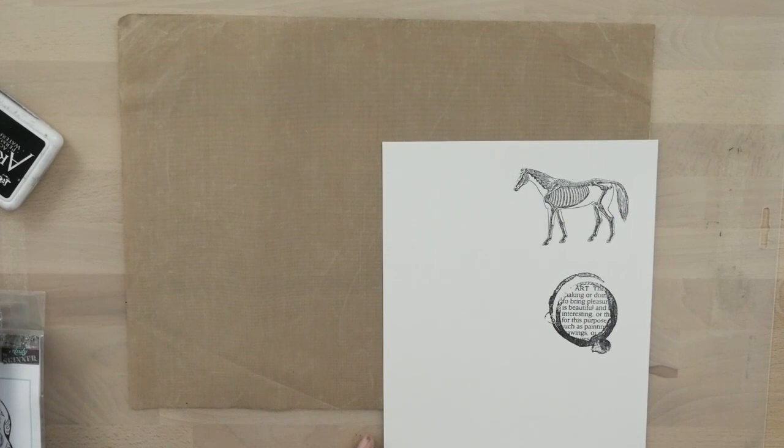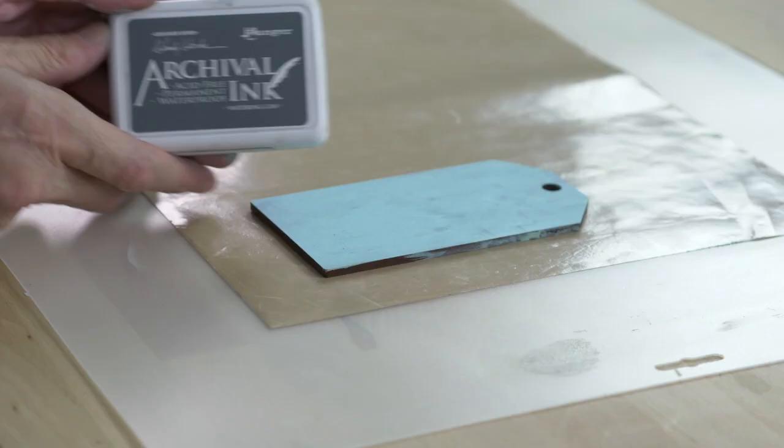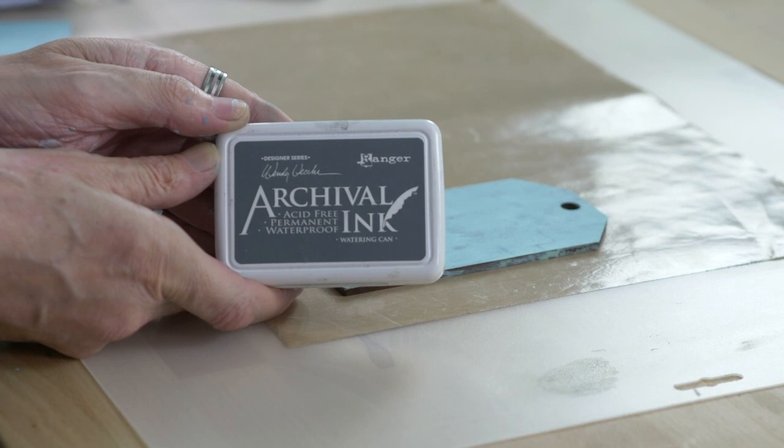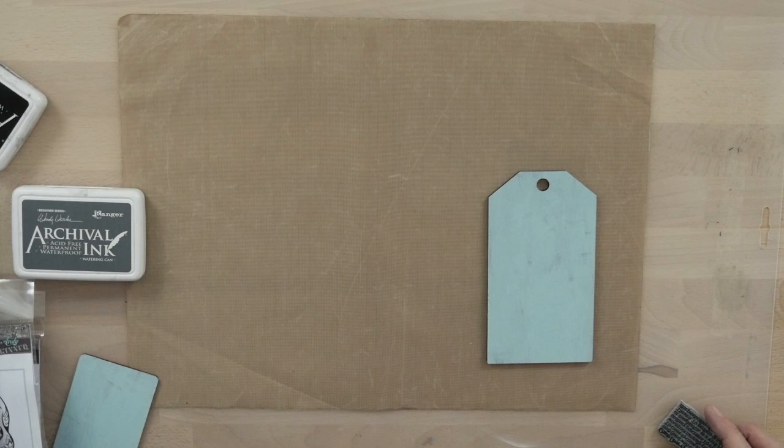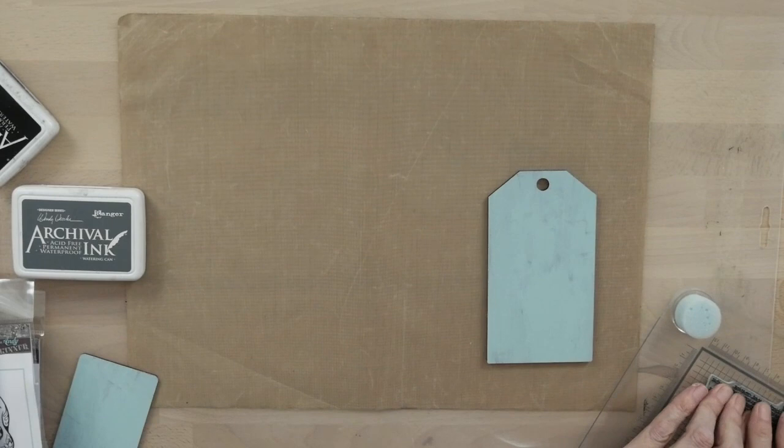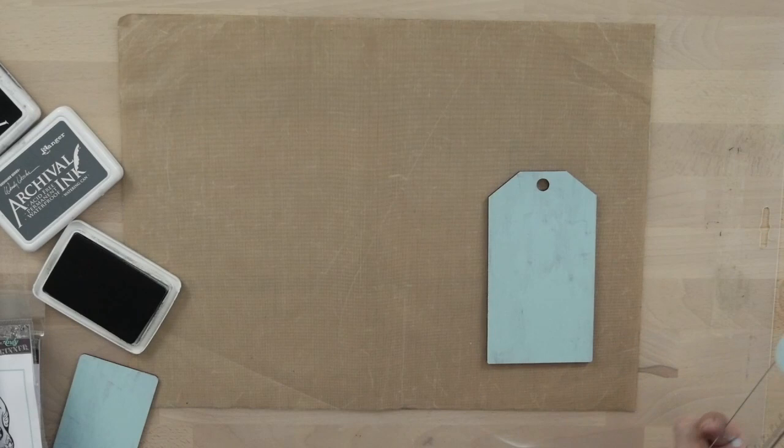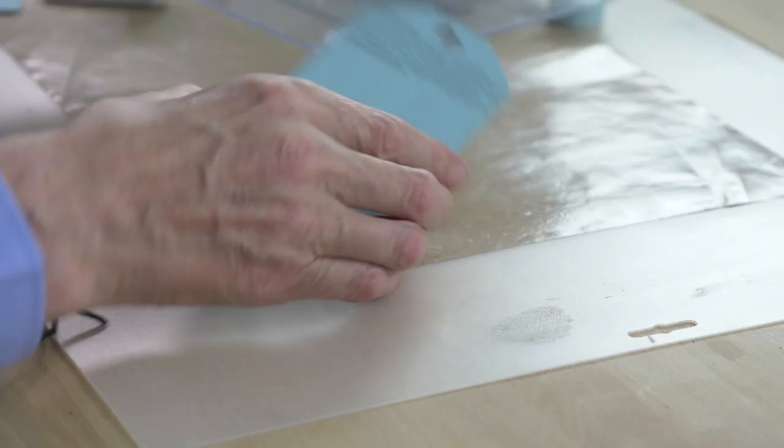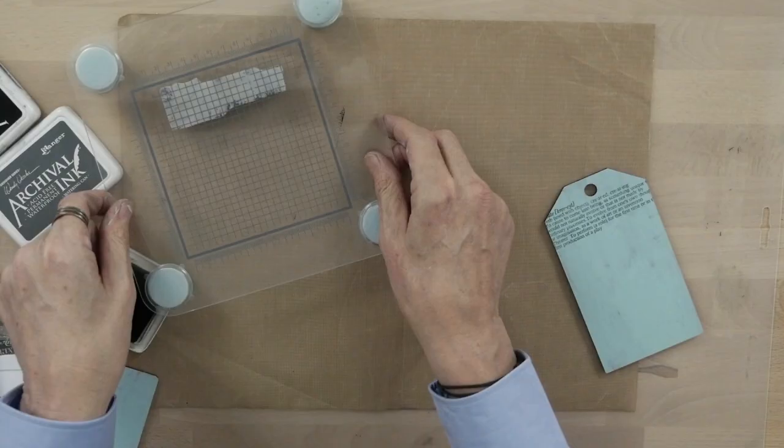So let's just give this a go on a pre-painted tag. For the background we're going to use watering can archival ink. It's nice and subtle and it means we can stamp black on top and it's really going to show up. So this is the create stamp. Make sure you've got it up the right way. Pat down with a watering can. So you can see it's not pitch black, bit of pieces on the background.